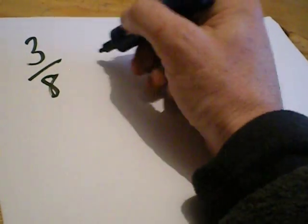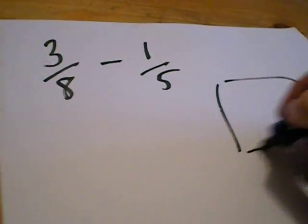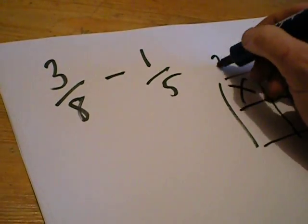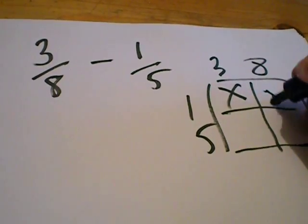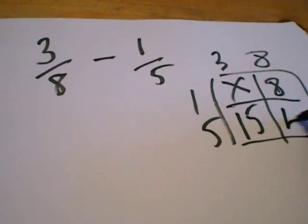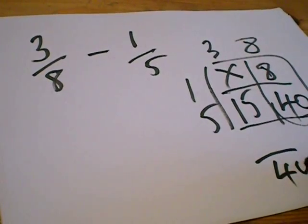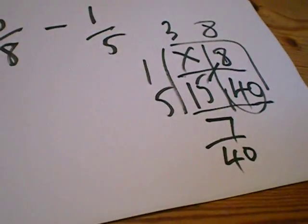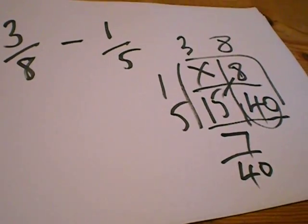So three over eight minus one over five. Box. You're getting the hang of it now, I expect. Cross there. Three over eight there, one over five there. One times eight is eight. Five times three is fifteen. And five times eight is forty. So at the bottom, this number here, we have forty there. And fifteen take away eight is seven. Seven over forty. That is the ultimate way to do fractions: adding and taking away.